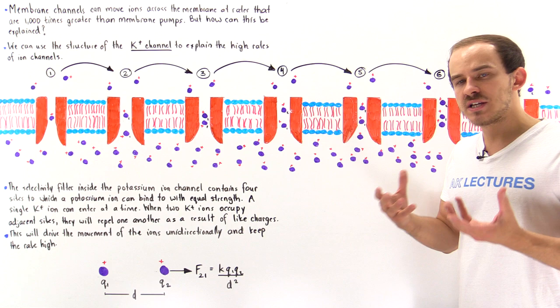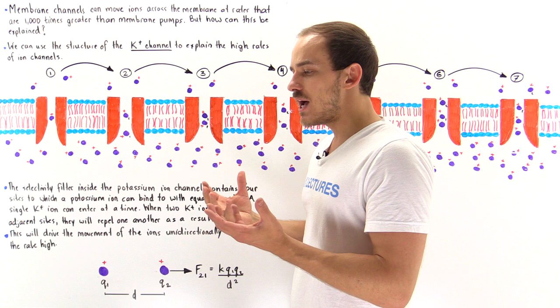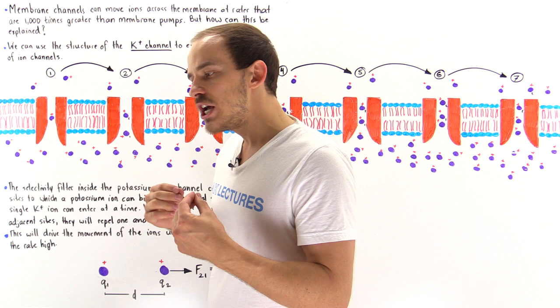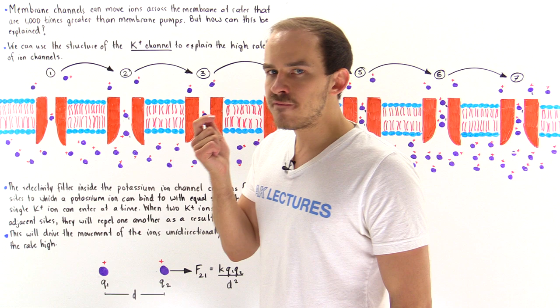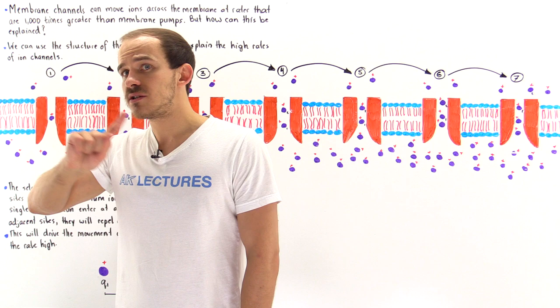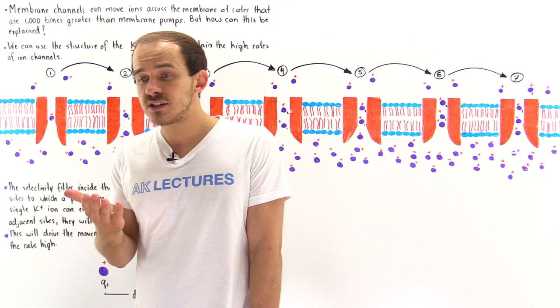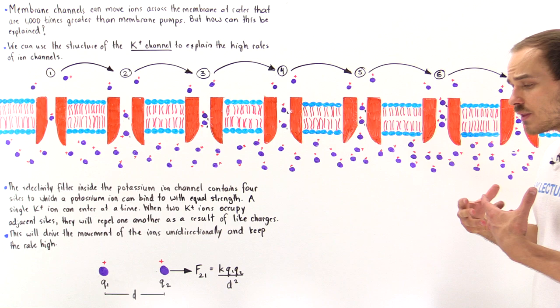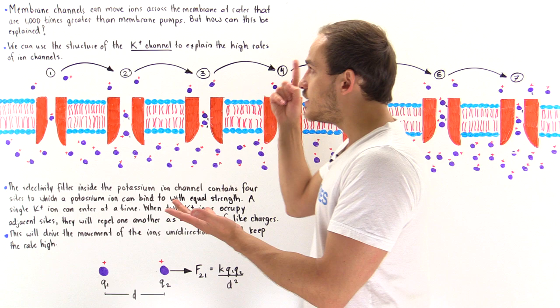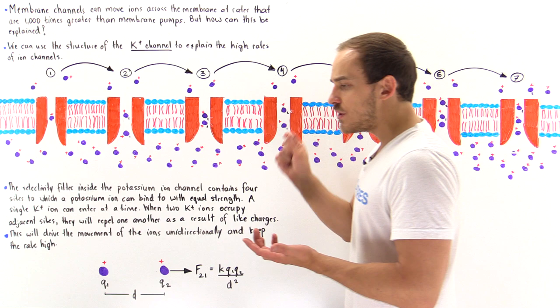In our previous lecture we focused on a specific type of ion channel known as the potassium ion channel, and we used it to generalize our results about other ion channels. Ion channels are ion specific, meaning they are very effective in moving a specific type of ion across the cell membrane. In the case of the potassium ion channel, only potassium ions move across the membrane, while sodium ions and all other types of ions are prevented from crossing — a result of the structure of the internal cavity inside the channel.